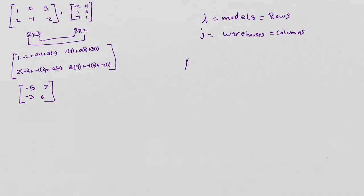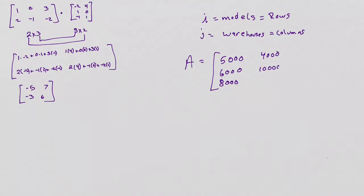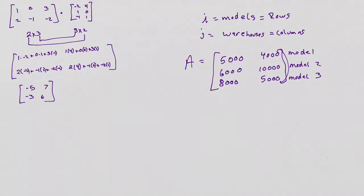It says it is represented by A sub IJ, so we will label our rows and columns so we know what's going on. It gives us matrix A: 5,000, 6,000, 8,000, 4,000, 10,000, and 5,000. The rows are model 1, model 2, and model 3, because our I's are our models. And the columns are warehouse 1 and warehouse 2. So for model 1 and warehouse 1, there's 5,000 units; for model 1 and warehouse 2, there's 4,000 units.